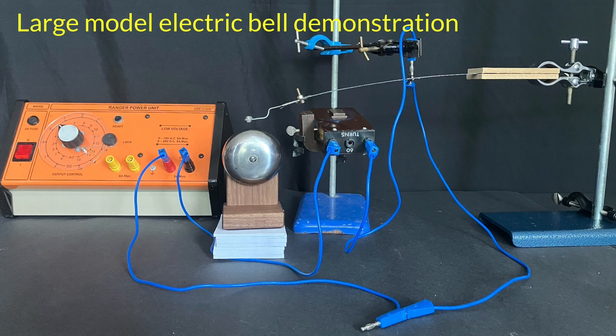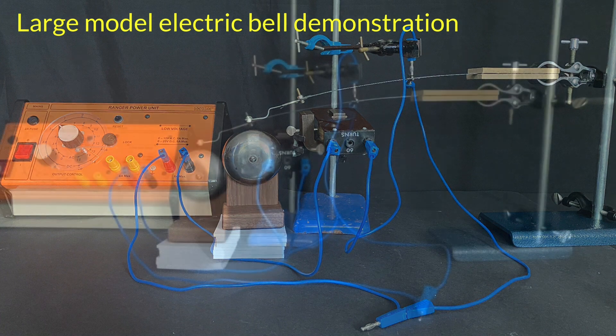this coil becomes an electromagnet and attracts this iron down, and the hammer hits the gong. But when the iron, which is on this hacksaw blade, is pulled down, it breaks the contact here, so then this stops being an electromagnet and it springs back up. Let's watch this